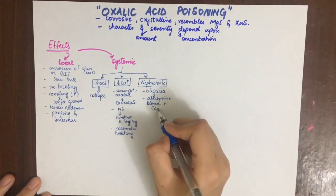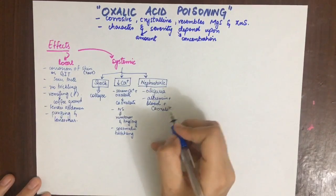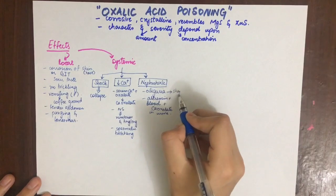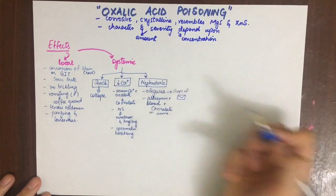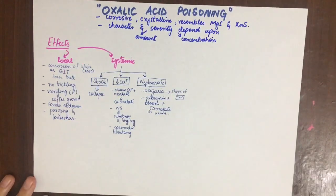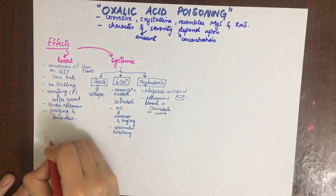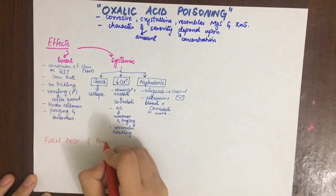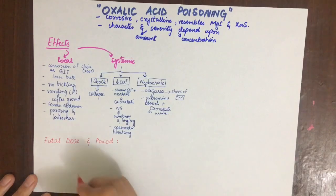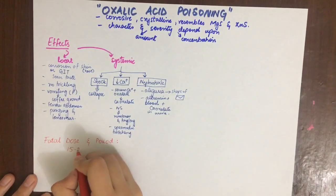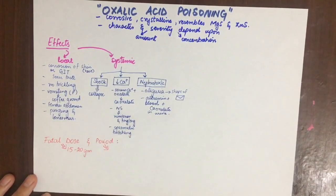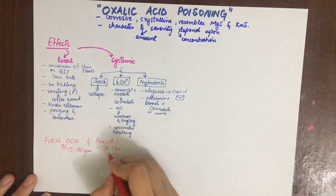Oxalic acid crystals can be seen in the shape of envelopes under the microscope. The fatal dose of oxalic acid is about 15 to 20 grams, and the fatal period is about one hour or a maximum of five days.